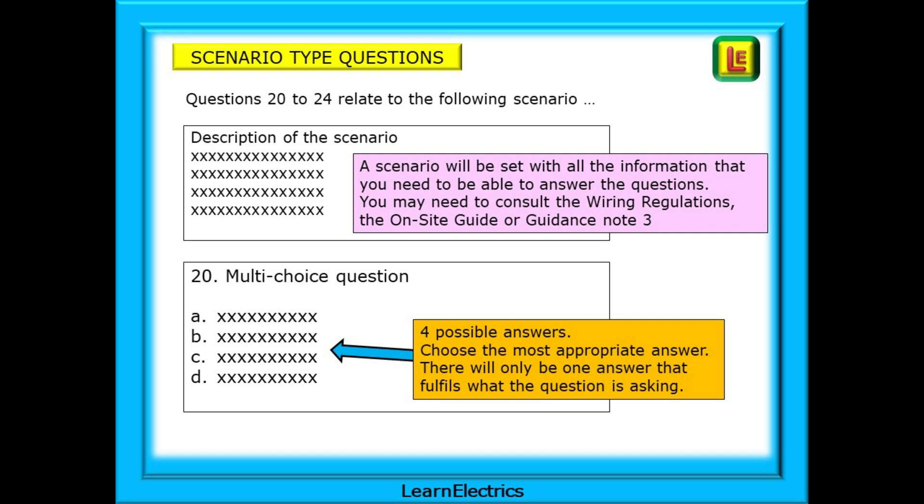There will usually be four or five questions on that particular scenario. You will have four possible answers to choose from for each question. Choose the most appropriate answer, that is important. Some answer choices might look right but they don't relate to the actual question. There will only be one answer that fulfills what the question is asking.